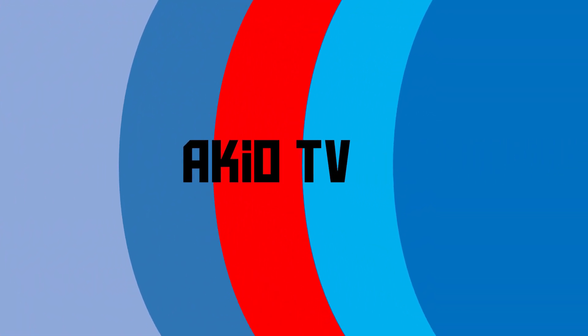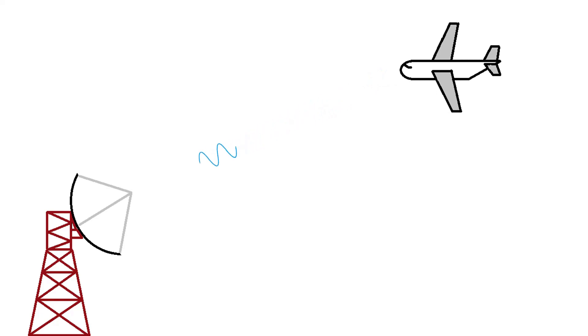A Doppler radar is sort of like a normal radar with some extra flavor added to it that makes it a bit more useful and also a bit more interesting to talk about. A standard radar is essentially a combination of a radio transmitter and a radio receiver. What it does is it sends out pulses of radio waves that then get reflected by objects such as aircraft, or whatever we might be looking for, and those will then be picked up by the receiver of the radar.